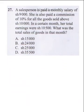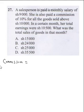The next question says a salesperson is paid a monthly salary of 9,000 shillings. She's also paid a commission of 10% for all goods sold above 10,000 shillings. In a certain month her total earnings were 10,500 shillings. What was the total sales of goods that month? The first thing we need to get is the extra amount she got on commission. Her total salary was 10,500 minus her basic salary of 9,000, so she received a commission of 1,500 shillings.